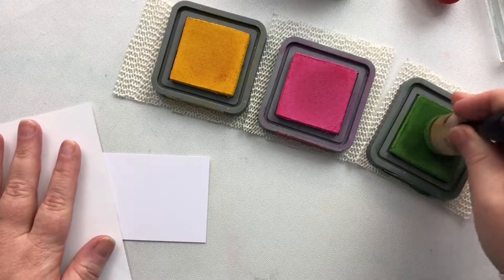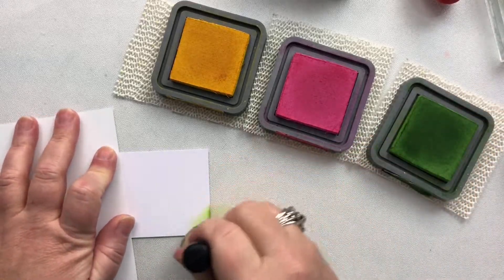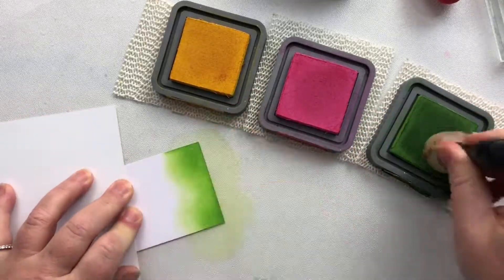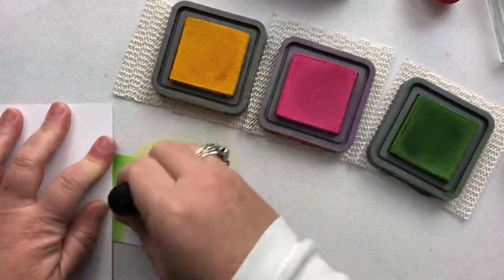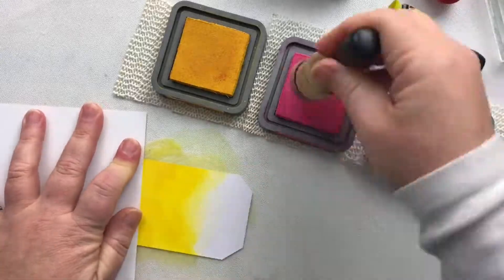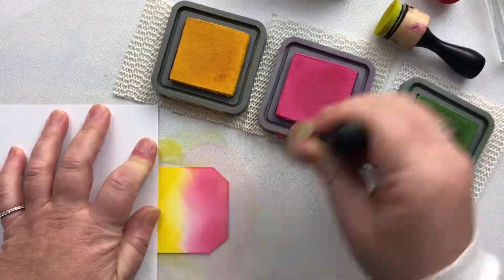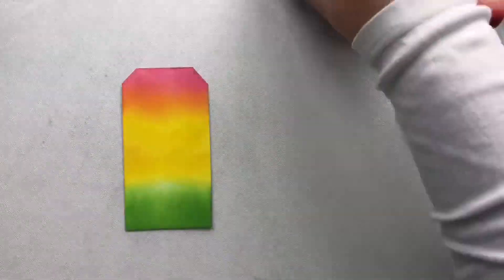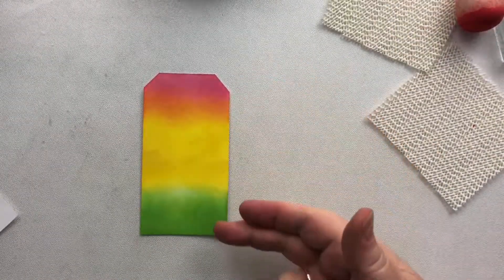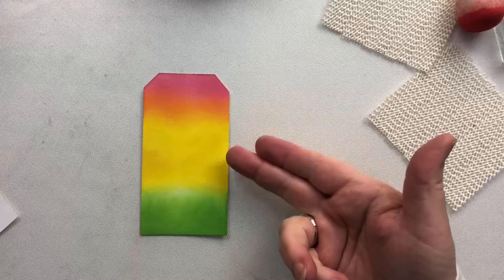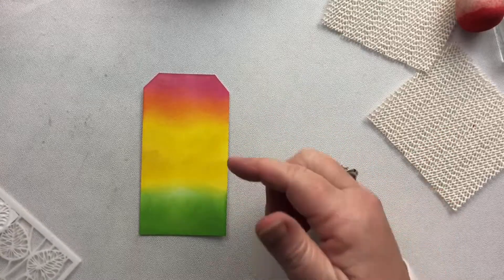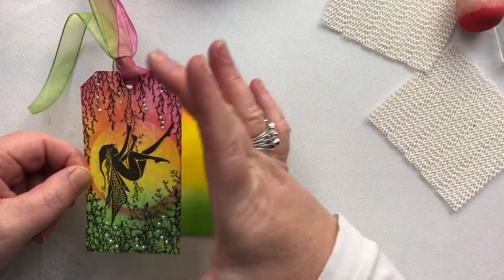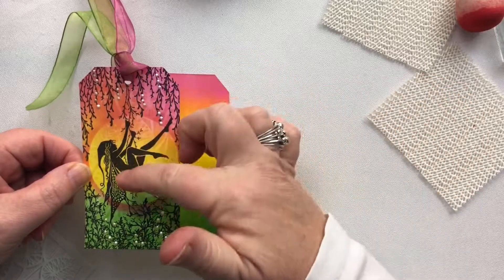I'm just going to ink up my sponge and color the background. So there we have any proportions of the Picked Raspberry, the Mustard Seed and the Mowed Lawn together. What you do want to make sure is that you've got enough of the Mustard Seed in the middle to enable us to create this little glow around where she hangs.